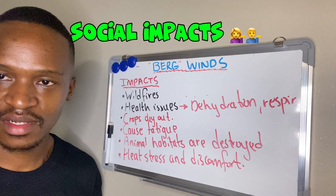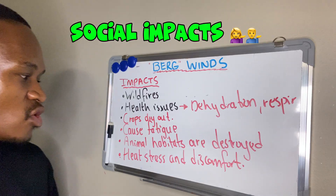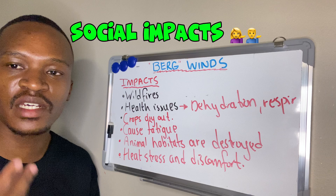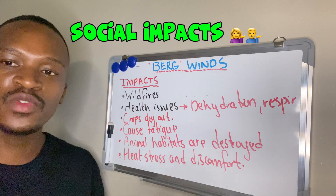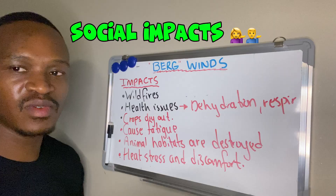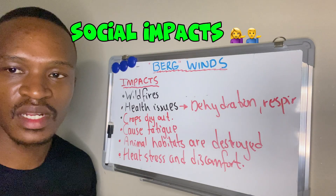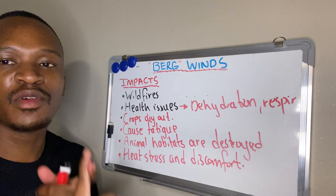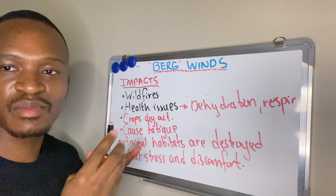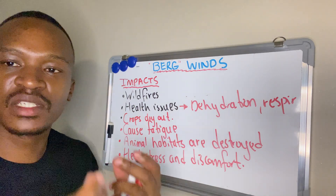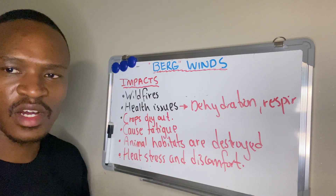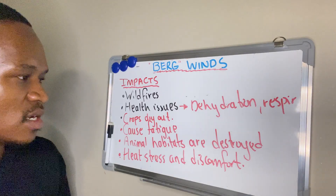For social impacts, remember social relates to people. Heat stress and discomfort affects people — that's a social factor. Fatigue, dehydration, and respiratory problems such as asthma are also social impacts. To summarize: social impacts relate to people, economic impacts relate to money such as job losses, decreased production and GDP, and environmental impacts relate to the natural and physical environment — vegetation burning, crops destroyed, and a rise in temperature.